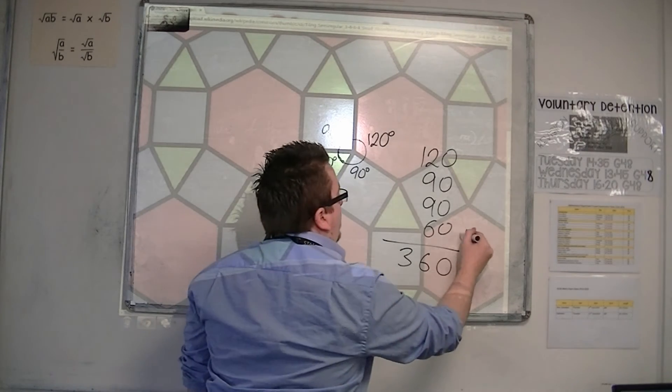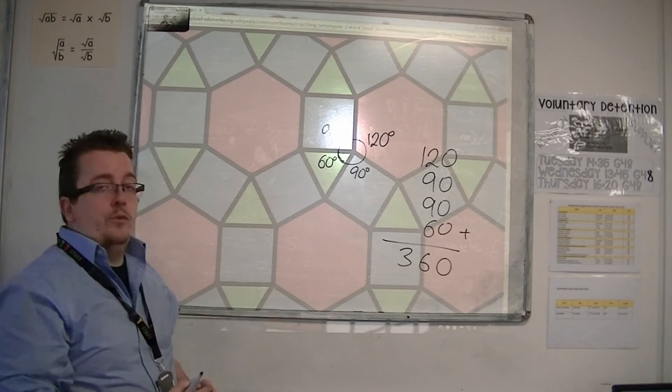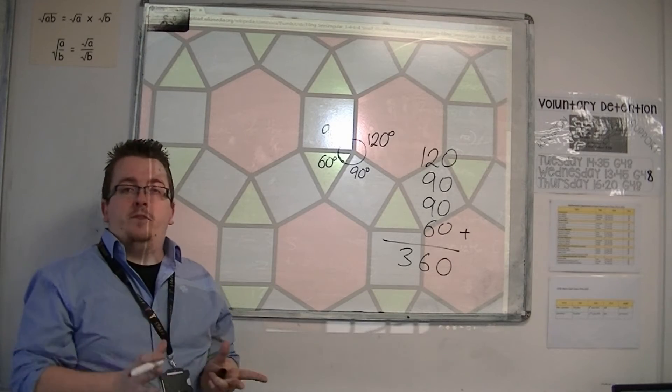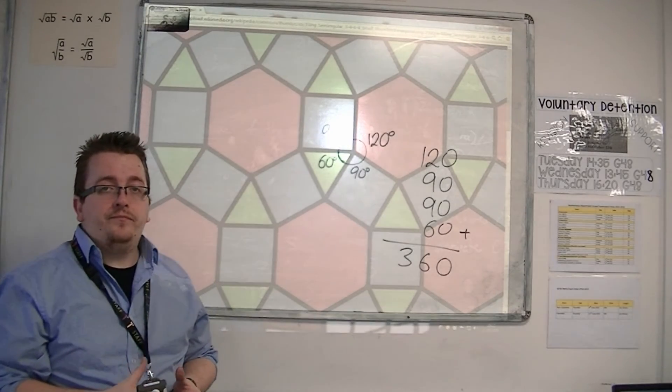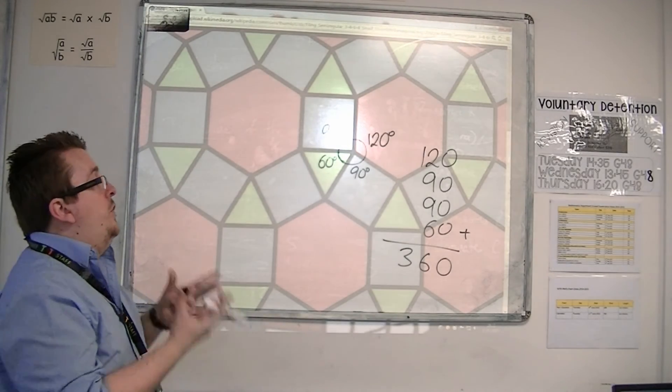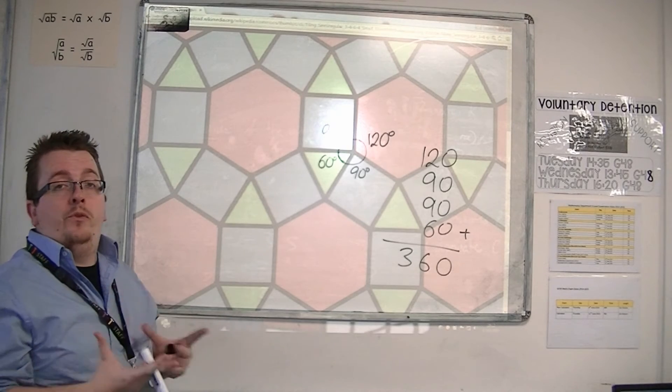So as long as the angles at a point add up to 360, then you can say that those shapes will tessellate.